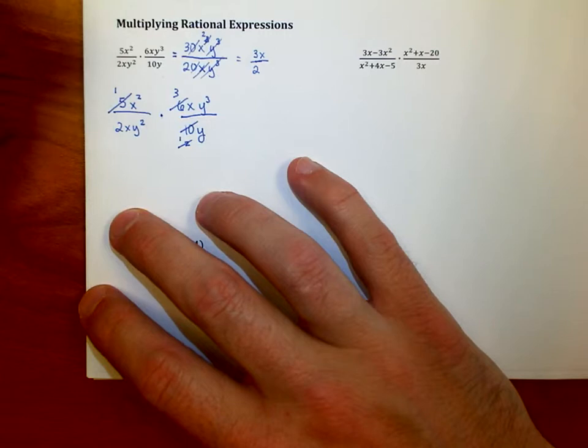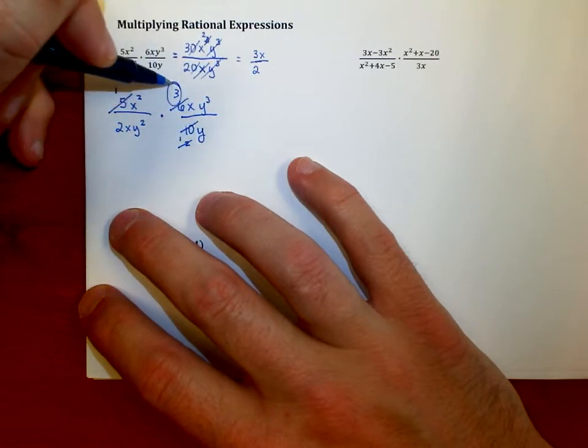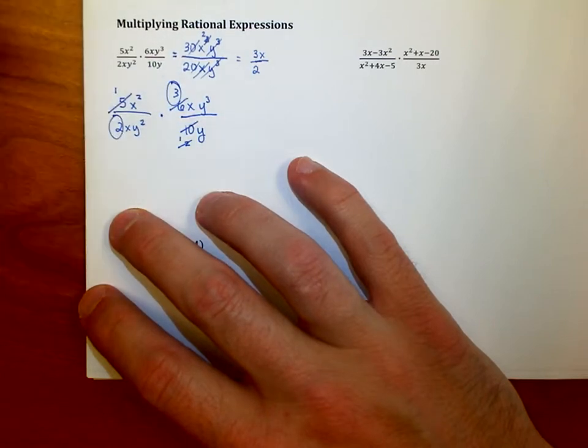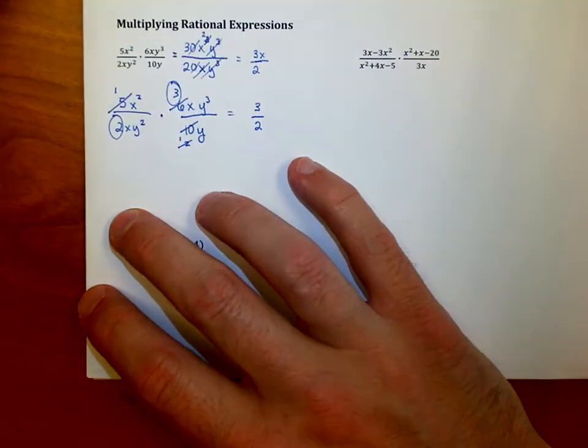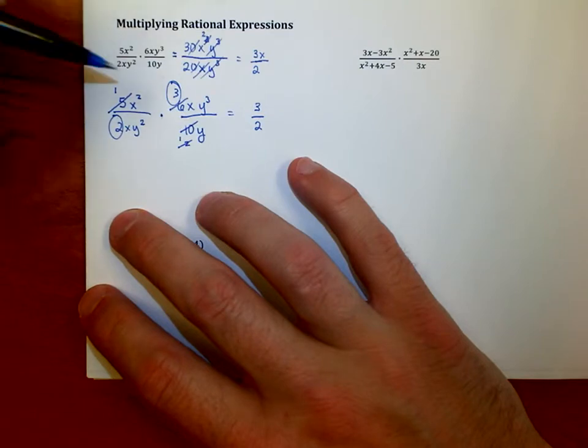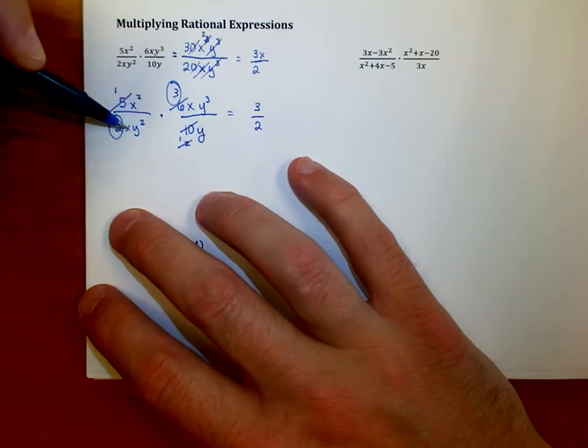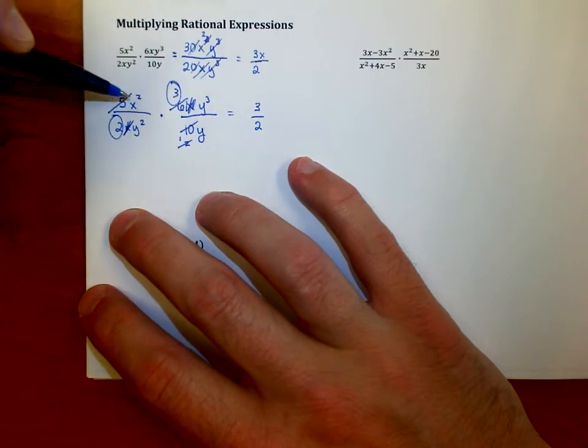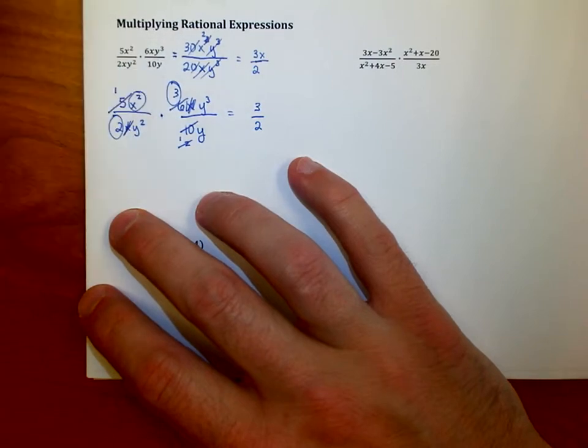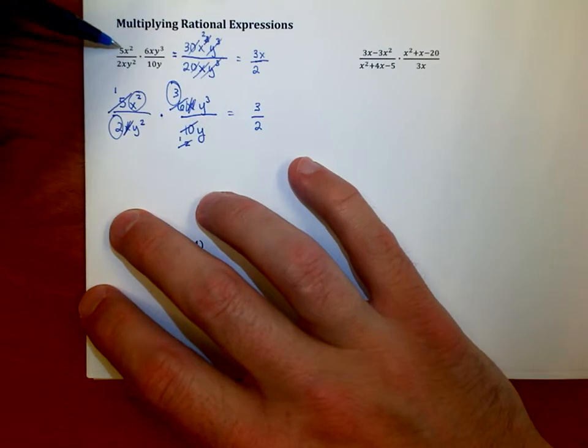Furthermore, I have 6 over 2, which reduces to 3 over 1. As far as numbers go, I only have a 3 left on top and a 2 left on bottom. As far as the x's go, I see I have an x on top and an x on the bottom here, so I'm just going to cancel them out.